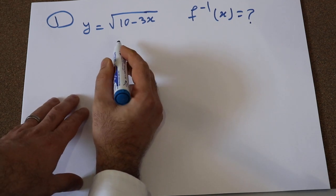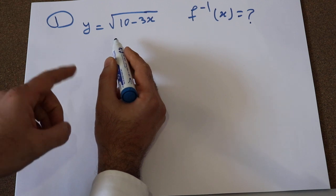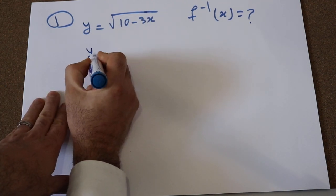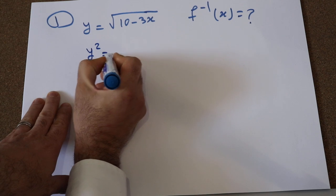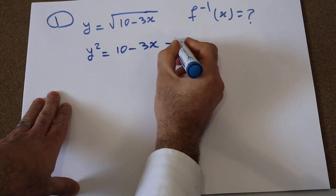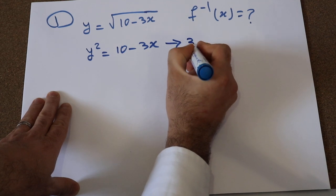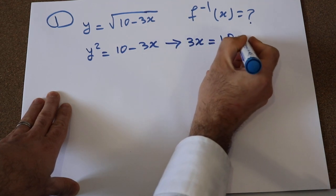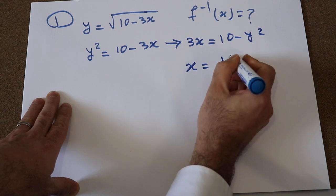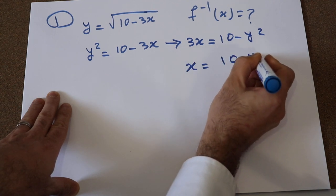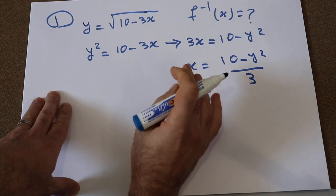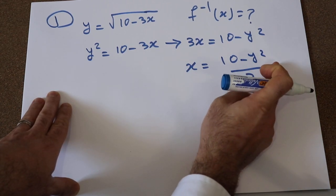As already mentioned, the first thing you need to do is to express x as a function of y. To do that, I square both sides: y² is equal to 10 minus 3x. From this equation, you can conclude that 3x is equal to 10 minus y². Therefore, x will be equal to (10 minus y²) divided by 3. That is step one — expressing x as a function of y.